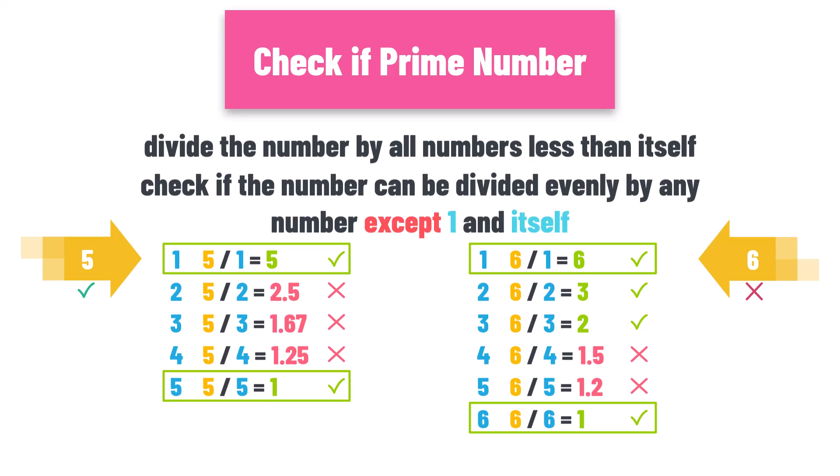For example, to check number 5, we only have to check the numbers 2, 3 and 4. To check the number 6, we only have to check the numbers from 2 to 5.